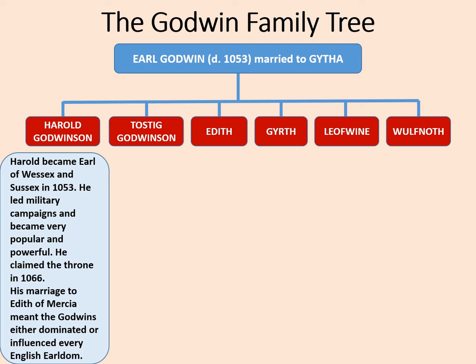Let's take each in turn. Harold became Earl of Wessex and Sussex in 1053. He led military campaigns and became very popular and powerful. He claimed the throne in 1066, and his marriage to Edith of Mercia meant that the Godwins either dominated or influenced every English earldom. He also later became King of England.